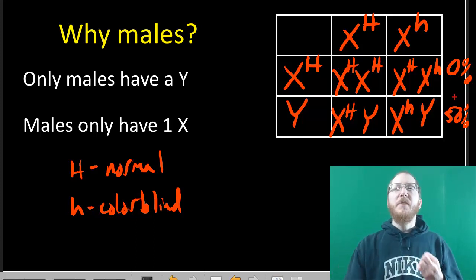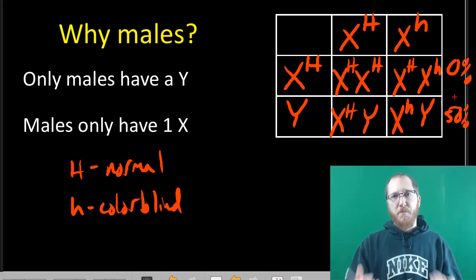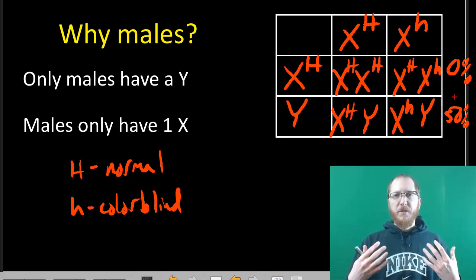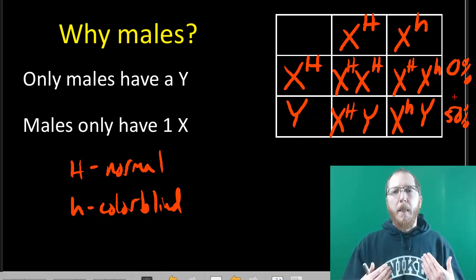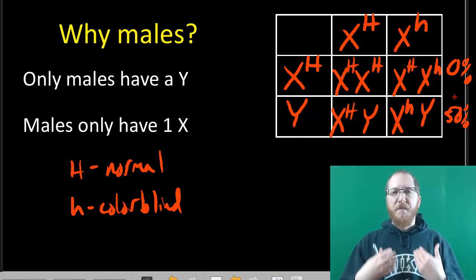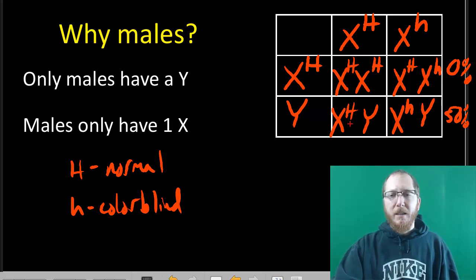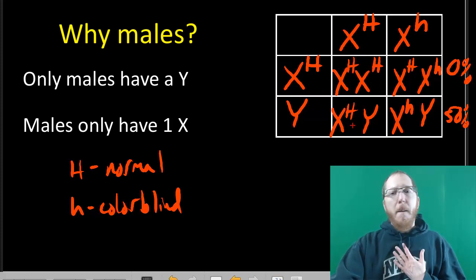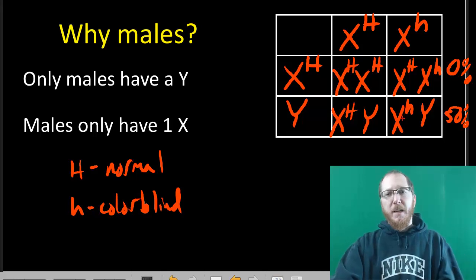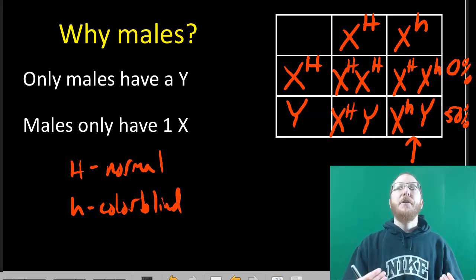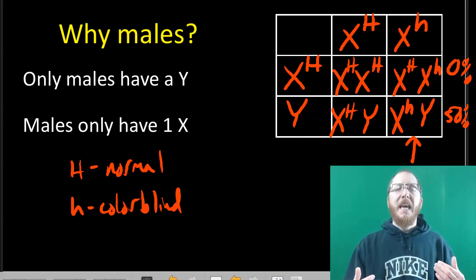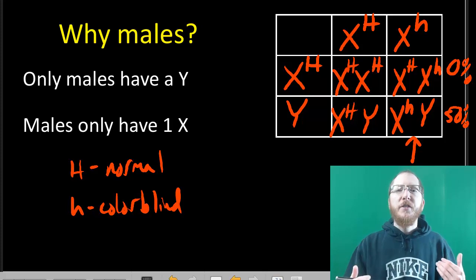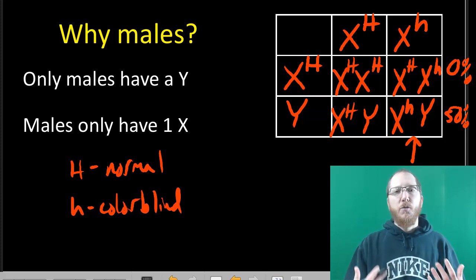This is what you tend to see with things like sex linkage. It's not that it only affects males. There are females that are affected by some of these X-linked recessive traits, but it tends to predominantly affect males because they only get one shot. If it's a recessive trait, females have two shots to get a dominant and be healthy. Males, if it's a recessive trait, get one shot, and if they get the recessive, they express it. So if you happen to see some pattern of inheritance where males tend to be affected, that's typically going to indicate that you have sex linkage going on, that the gene that's causing it is located on the X chromosome most likely.